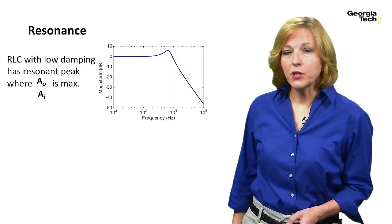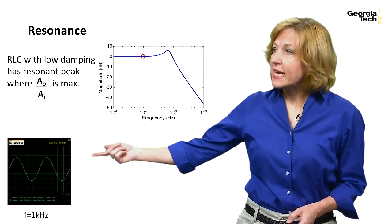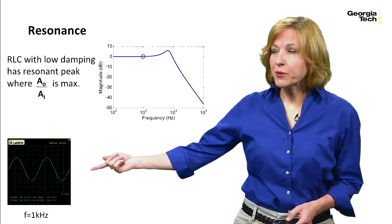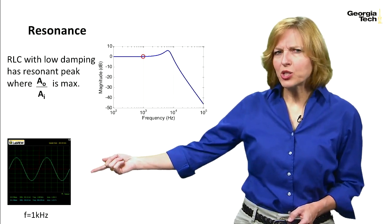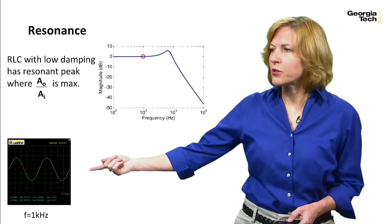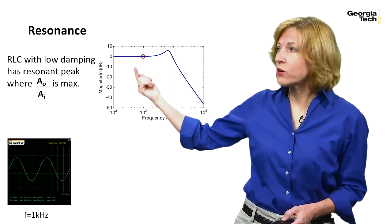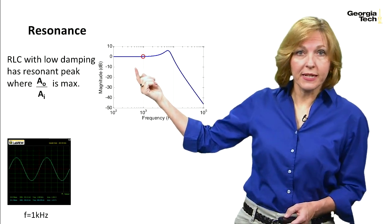So at low frequency, what we saw is that the output amplitude was pretty much the same as the input amplitude. So the ratio was equal to one, and that corresponds to zero decibels.